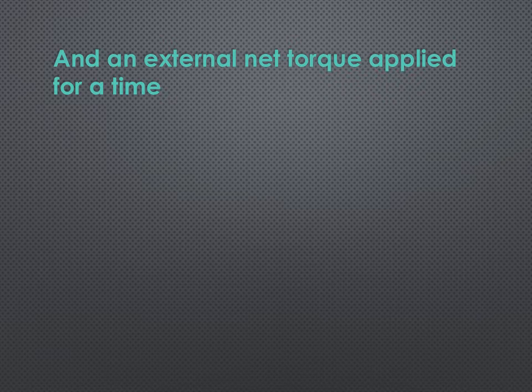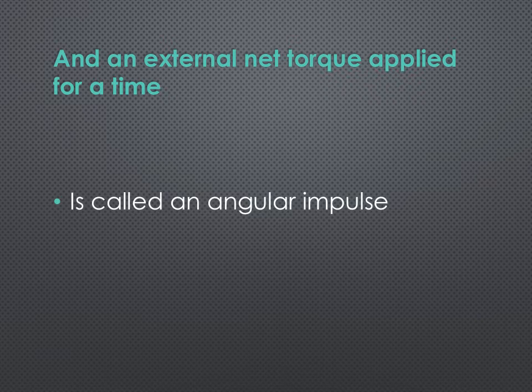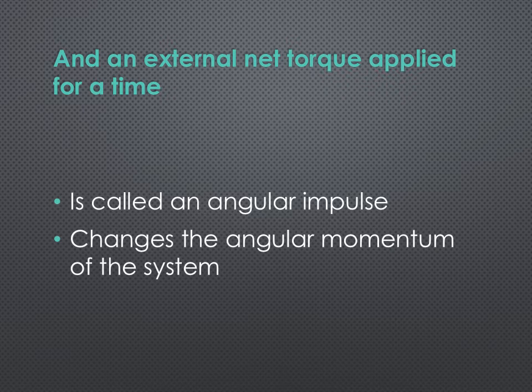If an external net torque is applied for a time, it's going to be called an angular impulse. This one does not have a special letter. We're just going to call this one delta L. And this external net torque, or this angular impulse, changes the angular momentum of the system.